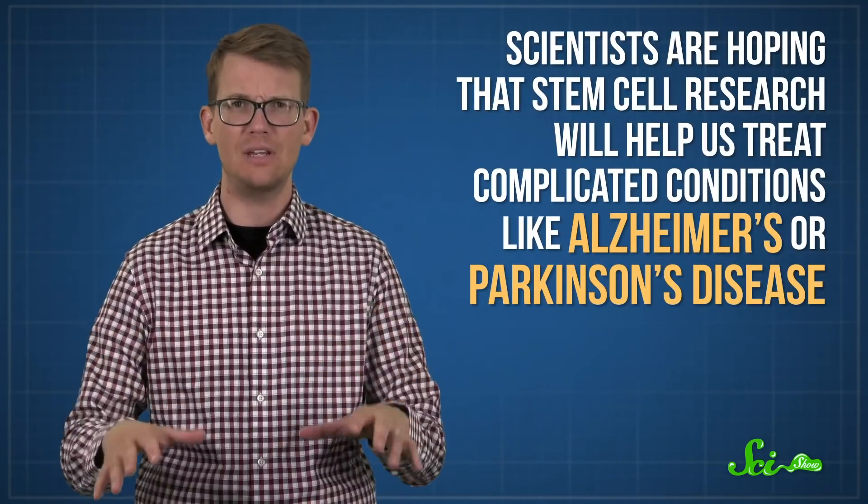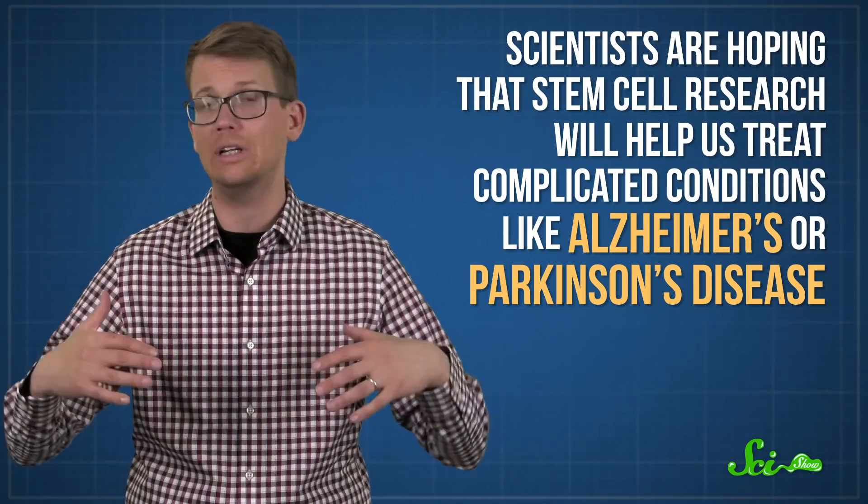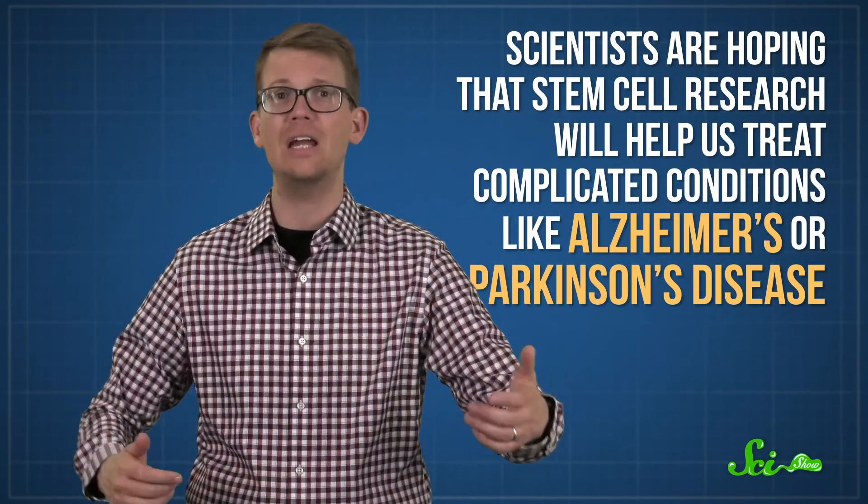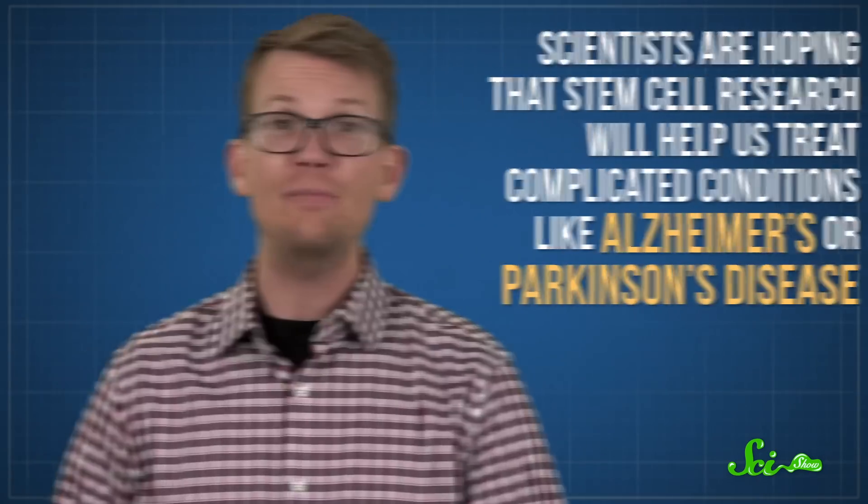Scientists are hoping that stem cell research will help us treat or even cure complicated conditions like Alzheimer's or Parkinson's disease. That's because both of these illnesses affect our body's neurons, which we don't really regenerate. However, understanding and harnessing the regenerative abilities of stem cells could one day allow researchers to repair or replace damaged neurons.